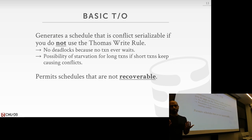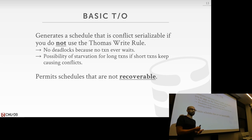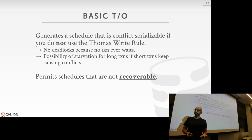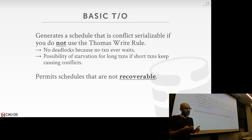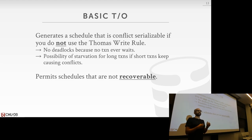Basic timestamp ordering, like two-phase locking, generates conflict-serializable schedules — as long as the Thomas Write Rule is not applied. It can prevent deadlocks altogether, because every operation checks timestamp validity eagerly, aborting as soon as a violation is detected — similar to deadlock prevention. One drawback is starvation: a long transaction running for a long time can be repeatedly invalidated by many short transactions that update a few tuples, then commit.